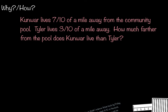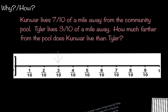Go ahead and pause your video so you can read this to yourself. One way we can go about solving this problem is to use what's called a fraction number line. We've got two fractions, and our question is asking us how much farther from the pool does Kunwar live than Tyler? So we're going to start at 3 tenths and jump to the next one, and the next one, and the next one until we land on 7 tenths. How many jumps did we make? The answer is 4, so the answer to this question would be 4 tenths.